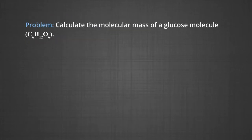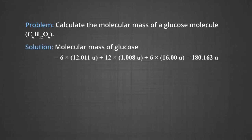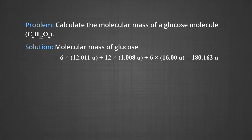We have a problem here: calculate the molecular mass of glucose, C₆H₁₂O₆. Molecular mass of glucose = (6 × 12.011u) + (12 × 1.008u) + (6 × 16.00u), and the answer is 180.162u.